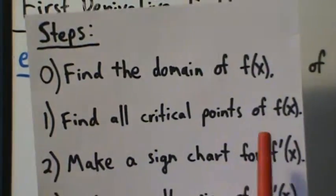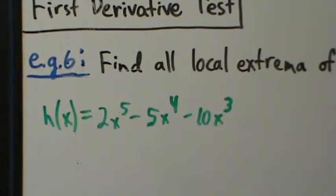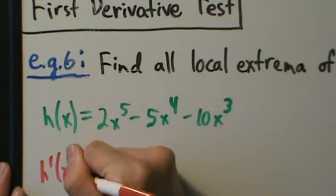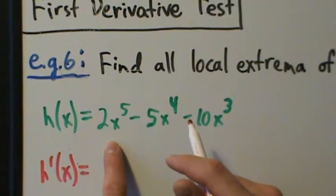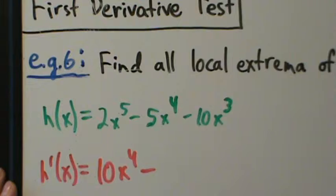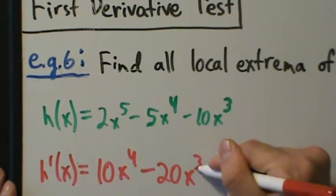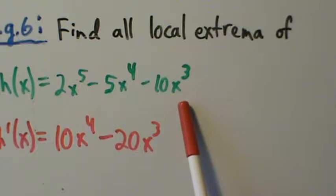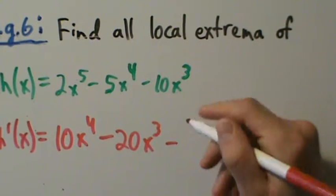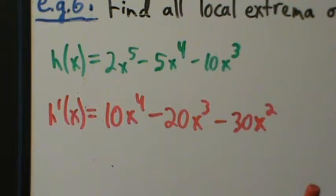Step 1: find all the critical points. That means take the derivative and find where the derivative is 0 and where it's undefined. So h prime of x — using the power rule — is going to be 10x to the 4th, then minus 20x cubed, and then minus 30x squared. That's our derivative. Now, the derivative is just a polynomial again, so it's never undefined.